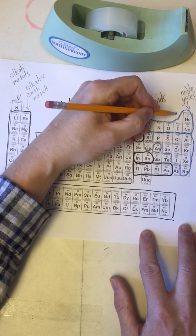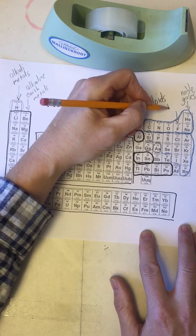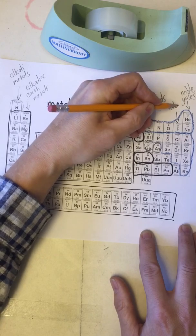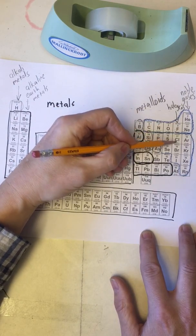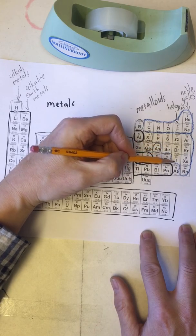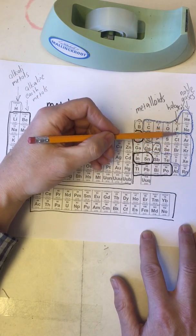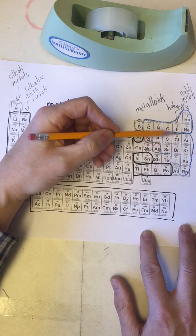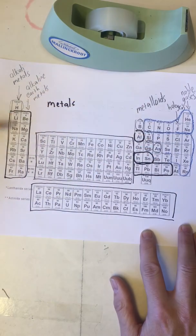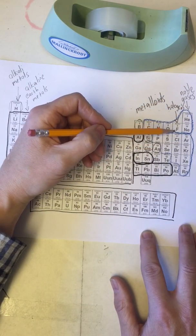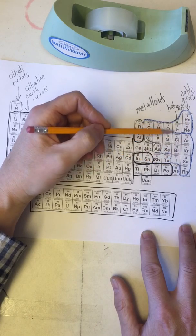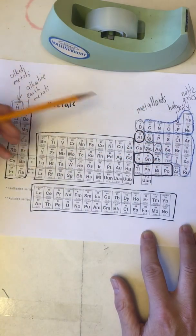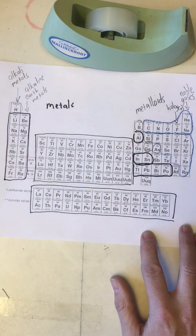And then finally we have the halogens. The halogens are fluorine, chlorine, bromine, iodine, and astatine. These are relatively reactive elements, they tend to react with metals, but they are similar in terms of the chemical properties. You'll see more of that in later courses. So those are the halogens.